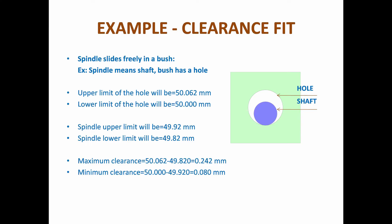Example of clearance fit: a spindle slides freely in a bush. The spindle is the shaft and the bush has a hole. Upper limit of the hole: 50.062 mm; lower limit of the hole: 50 mm. Spindle upper limit: 49.92 mm; spindle lower limit: 49.82 mm. Maximum clearance = 50.062 minus 49.82 = 0.242 mm.